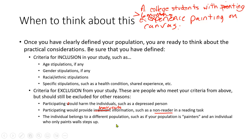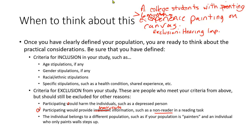Or the individual belongs to a different population — for instance, if your population is canvas painters and someone who only paints walls steps up. In Arneesha's case, an exclusion she thought necessary was to exclude people with hearing impairments because they can't listen to the music. What about someone who is colorblind? Well, could they still be an artist? You have to have a good reason to exclude them.